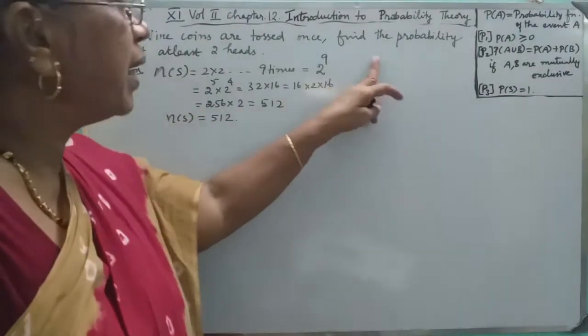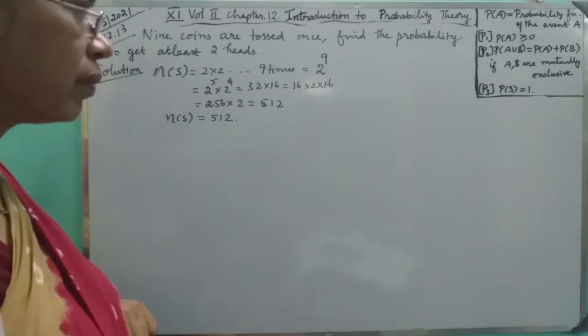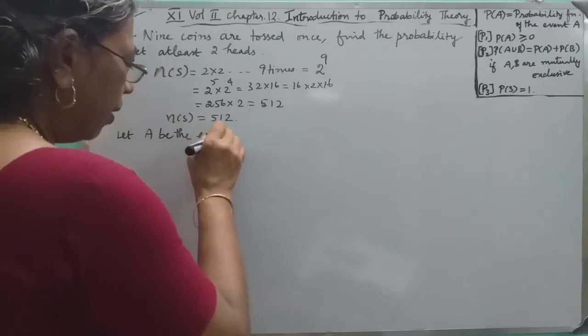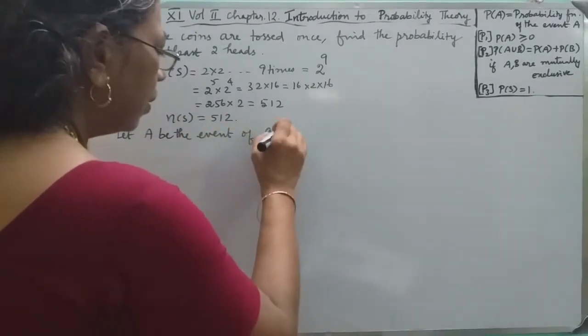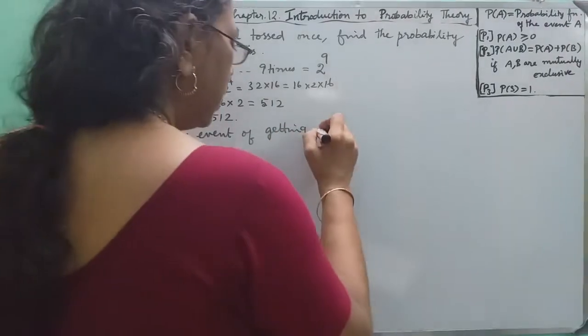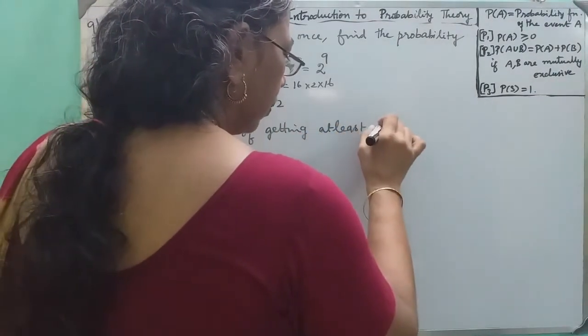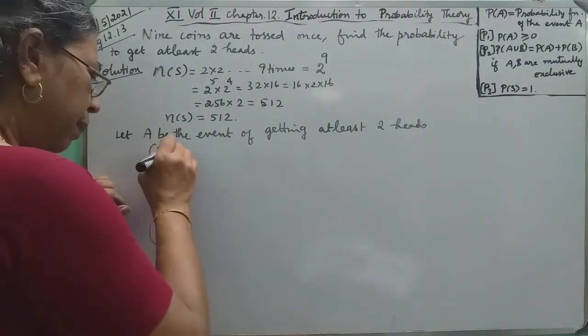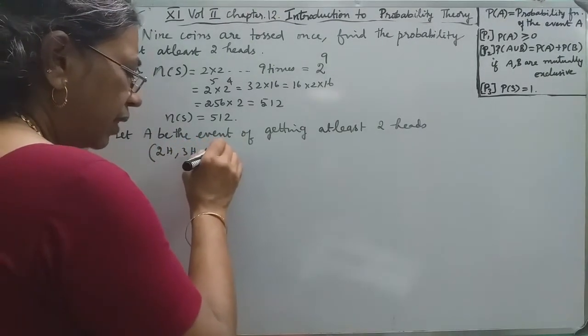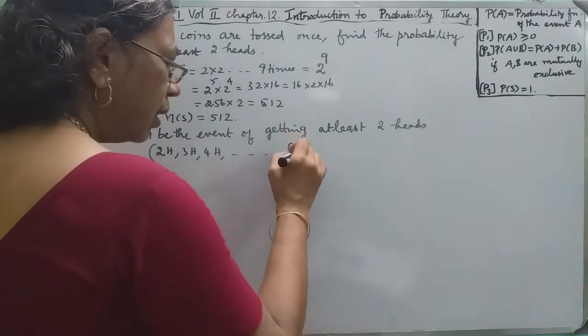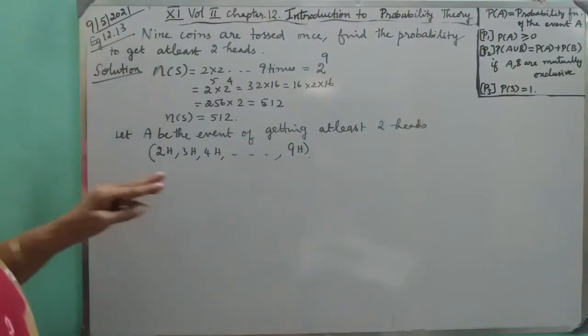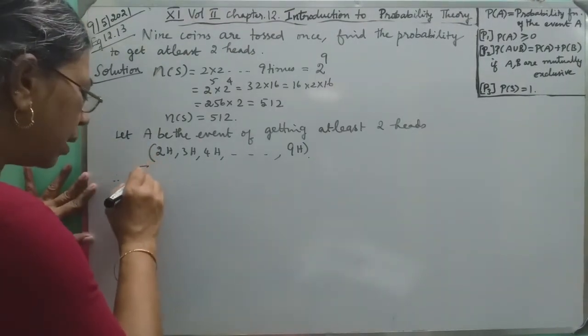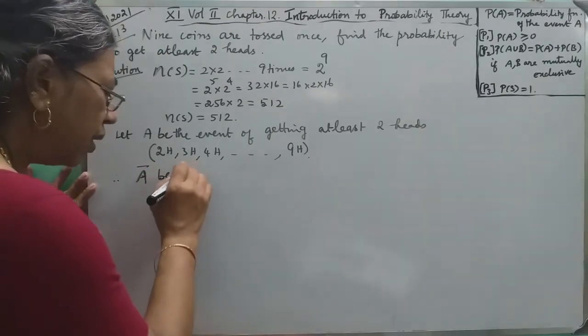Find the probability to get at least 2 heads. Let A be the event of getting at least 2 heads - that means 2 heads, 3 heads, 4 heads, up to 9 heads. This is the event.